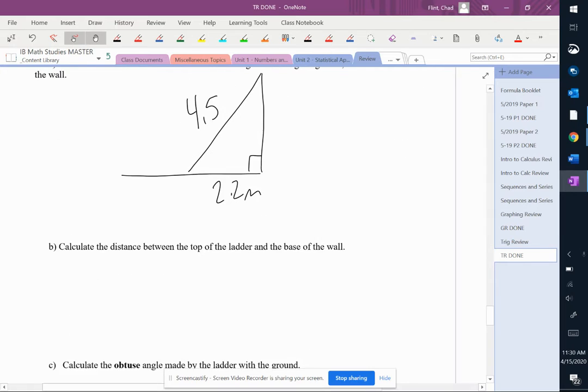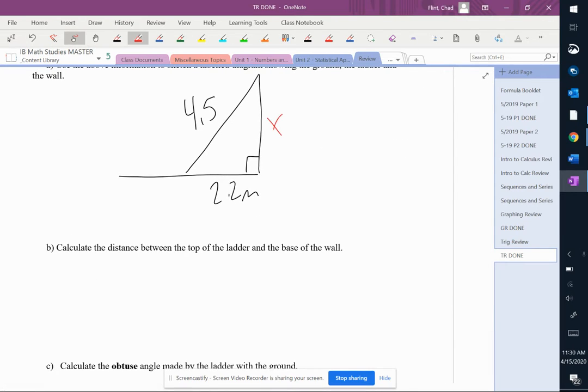It says calculate the distance between the top of the ladder and the base of the wall. So step one wants that. That's a straight Pythagorean theorem problem: A squared, B squared, C squared. Remember, this is the hypotenuse.